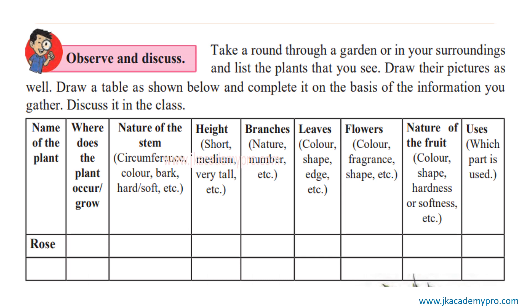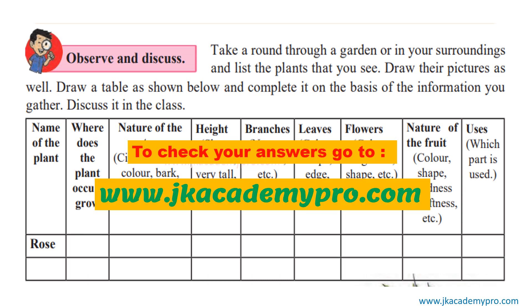Record the nature of the stem — the circumference, the colour, the bark, whether it was hard or soft. Then the height — very high or very short. The branches — whether it is branching out. What about the leaves — the colour and the shape? What about the flowers — how were they, what colour were they? And the nature of the fruit — did you see any fruits, and how were they? What were the uses? So all these things you can list and make into a table form. You can also check your answers at our website at www.jkacademypro.com.